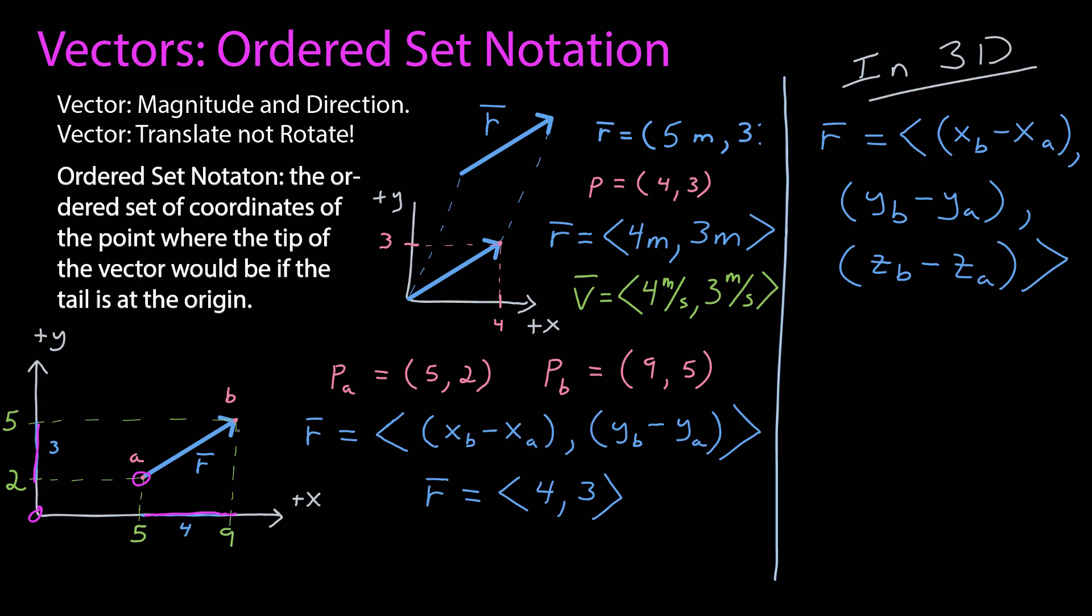In three dimensions, we extend it in exactly the same way. You just take the differences of all three coordinates. For example, if I have a vector whose tail is at (4, 3, -2) and tip is at (-2, 2, 6), then that vector is -2 minus 4, which is -6, 2 minus 3, which is -1, and 6 minus -2, which is 8.